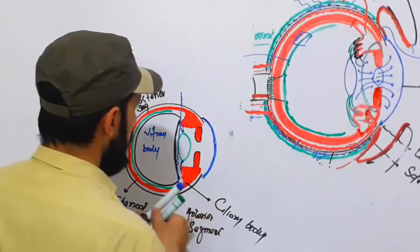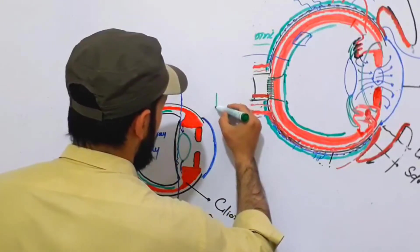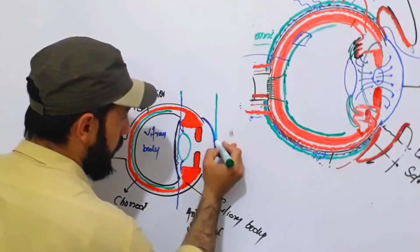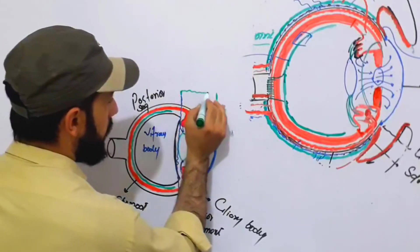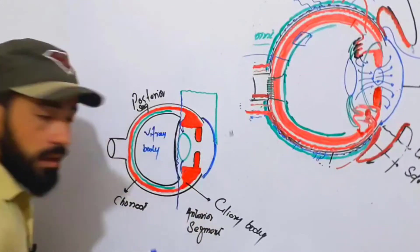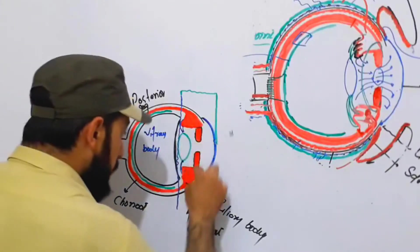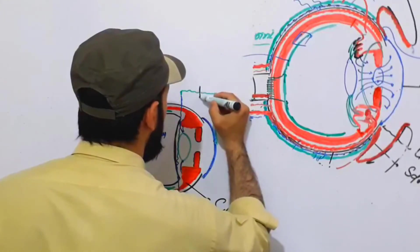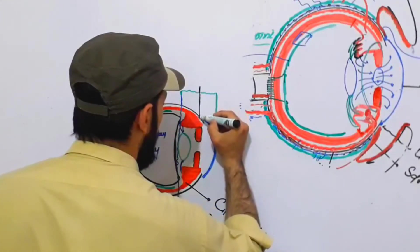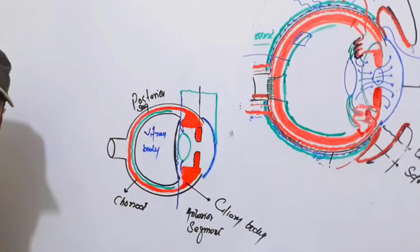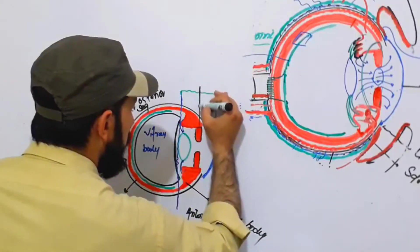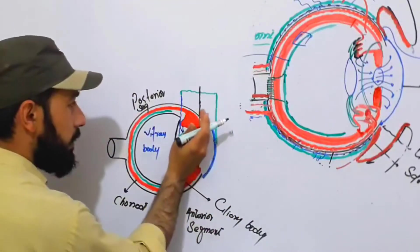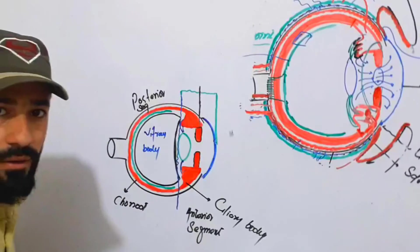The anterior segment starts at the vitreous body and ends at the cornea. The iris is present in the center of the anterior segment. This position divides the anterior segment of the eye into the anterior chamber and the posterior chamber.